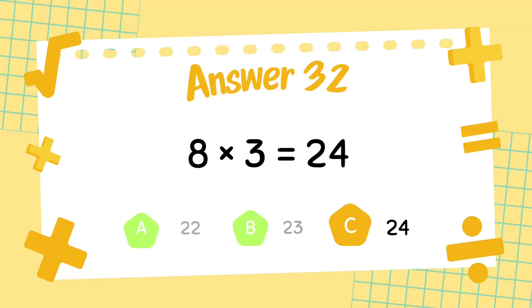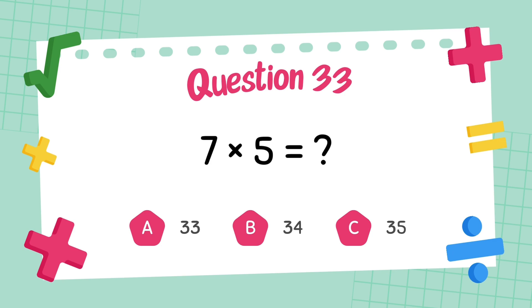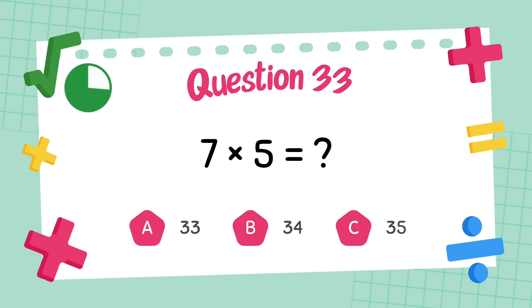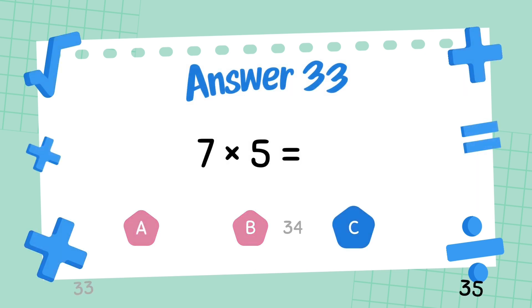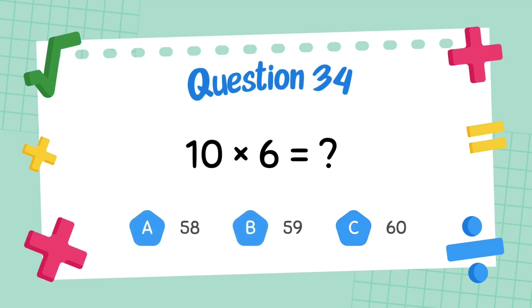What is 7 multiply 5? The answer is 35. What is 10 multiply 6? The answer is 60.